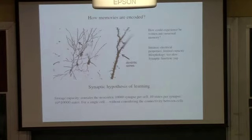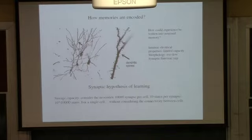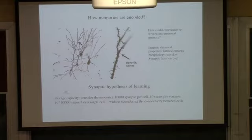Synaptic plasticity is how neuroscientists think about the fundamentals of learning and memory. What I have here is a neuron — a pyramidal neuron in the cortex — and each one of those little things are spines. Basically, those are synapses.